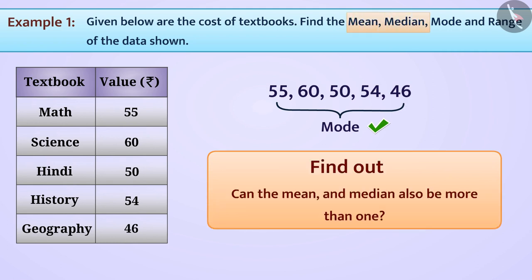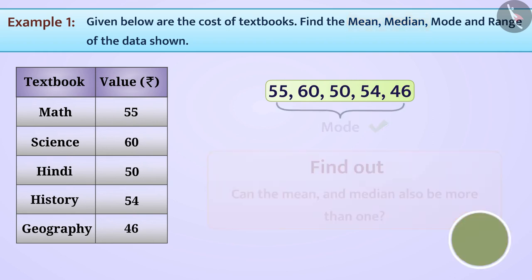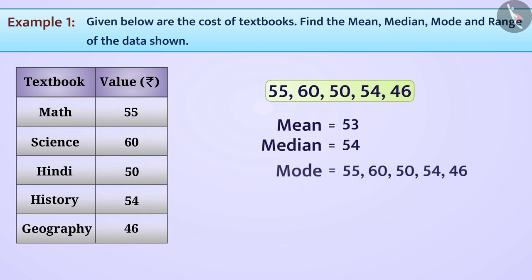This brings us to the conclusion that a data set can contain more than one mode. Do you think the mean and the median can also be more than one for a data set? Why don't you find that out by yourself? In this way, we have found the mean, median, mode and the range in the group of data shown.